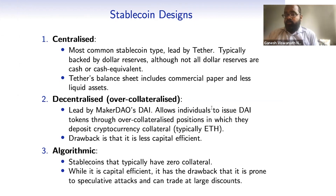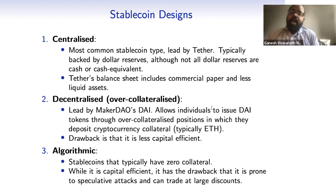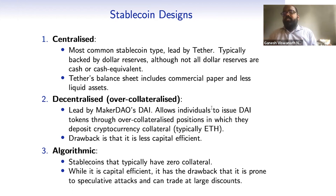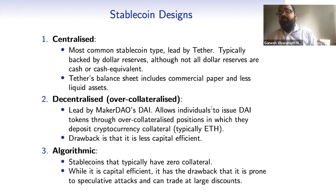If you have a very large collateral ratio, it becomes capital inefficient. Algorithmic stablecoins are the third type. As mentioned, they're typically unbacked, and the drawback is that if there are no reserves, a speculative attack can lead to a collapse of the peg — because essentially the issuer does not have any dollar reserves to be able to meet redemptions.